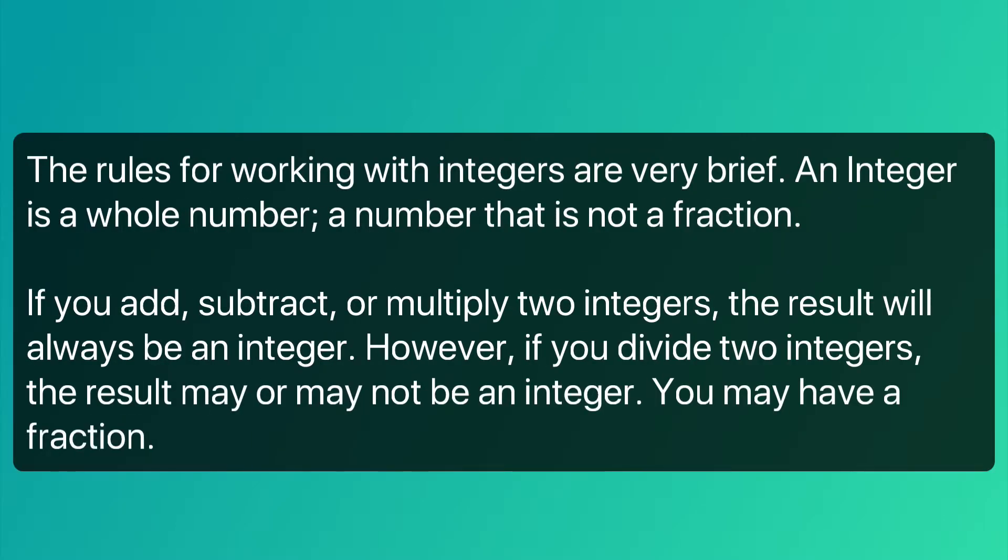The rules for working with integers are very brief. An integer is a whole number, a number that is not a fraction. If you add, subtract, or multiply two integers, the result will always be an integer. However, if you divide two integers, the result may or may not be an integer. You may have a fraction.